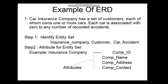The entity sets here are: insurance company, customer, car, and accident. Insurance company is an entity set, car is an entity set, and accident is also an entity set. Entity set meanings have been covered in previous lectures, so please watch those videos to understand what entity sets are.